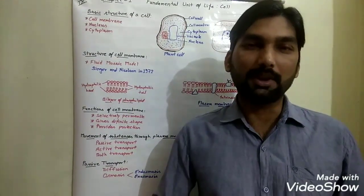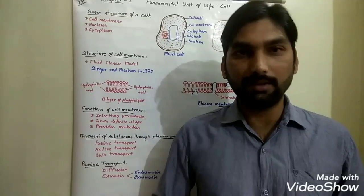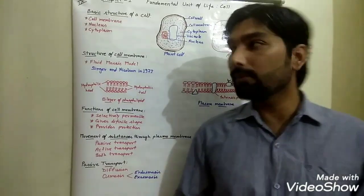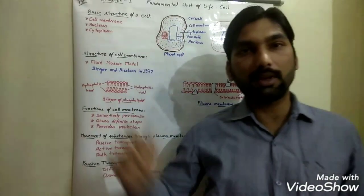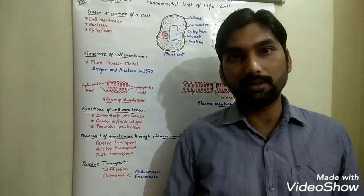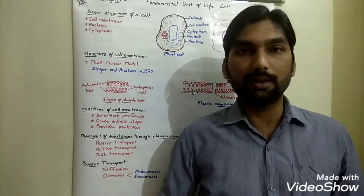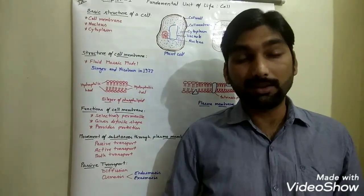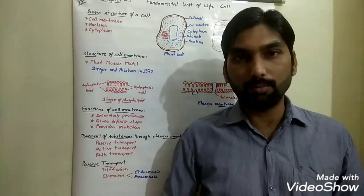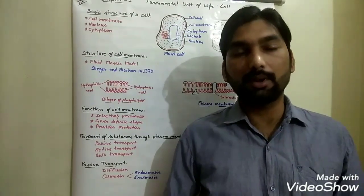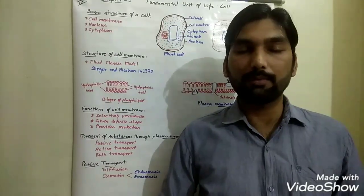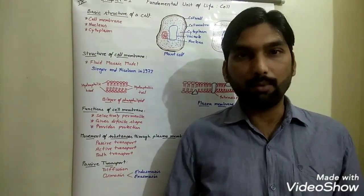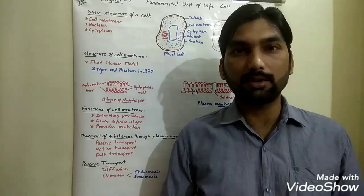Hello students, once again I welcome you all in my new video for class 9th. In my previous video we completed the basic introduction of the fundamental unit of life — the cell — and variety in cell shape, cell size, and types of cell like unicellular, multicellular, prokaryotes and eukaryotes, and the discovery of cell along with the microscope. So based on these topics, a few questions were given as an assignment in the previous video and I hope you all have done that. If not, I will provide you the answers to those questions in today's video.